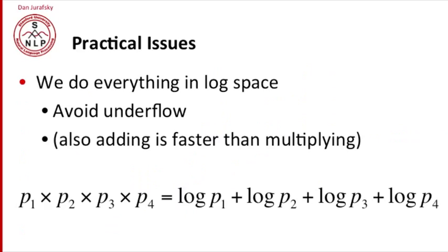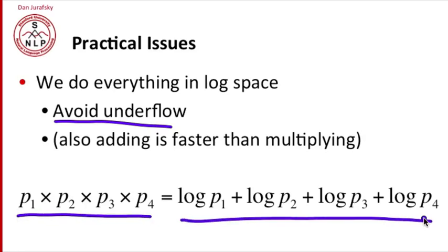In practice, we don't keep these probabilities in the form of probabilities. In fact, we keep them in the form of log probabilities. There are two reasons for this. One is, we can avoid underflow. If you think about it, if you have a very long sentence and you're multiplying together 20 or 30 or 40 little tiny probabilities, each of which is a very small number less than zero, you get a very small number that often ends up with arithmetic underflow in the computation. And it turns out that adding is faster than multiplying anyway. So instead of multiplying probabilities, we'll just add log probabilities.